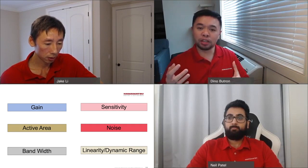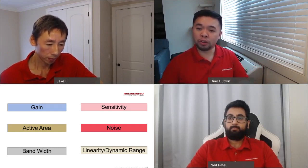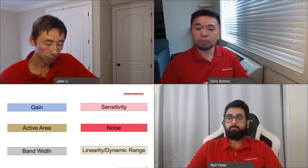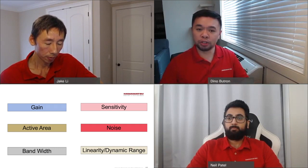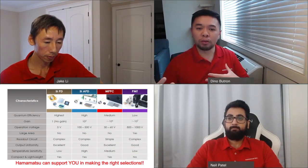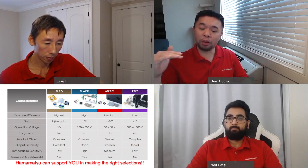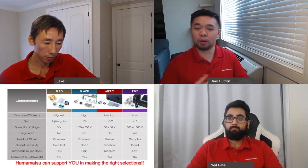Active area determines the collection area for photons. A larger active area means you could potentially collect more photons, especially if your signal is diffuse in nature. But it can also affect noise, because a larger active area — especially in solid state detectors — can increase dark noise. Noise generally refers to dark noise, and its fluctuation determines how low a light level you can measure. Dynamic range considers both the lower end of light you can reasonably detect and the upper end of linearity, which is the upper limit of how much light you can detect.